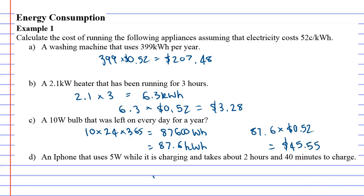Question D, this is our tricky one: an iPhone that uses 5 watts while it is charging and takes about 2 hours and 40 minutes to charge. This is going to be a minuscule amount.